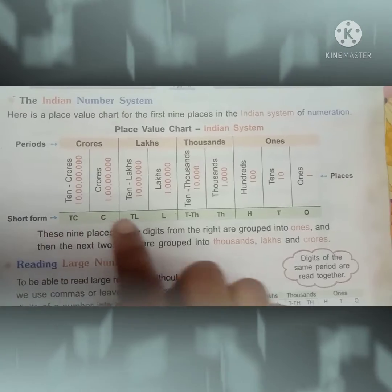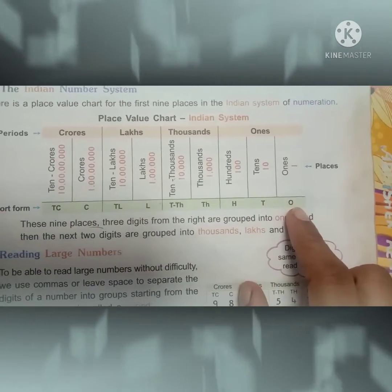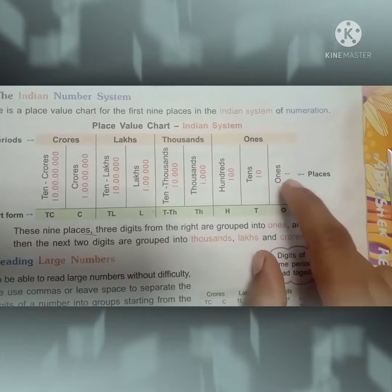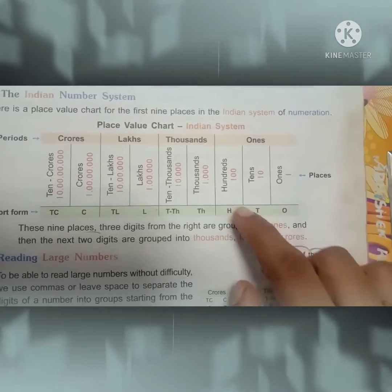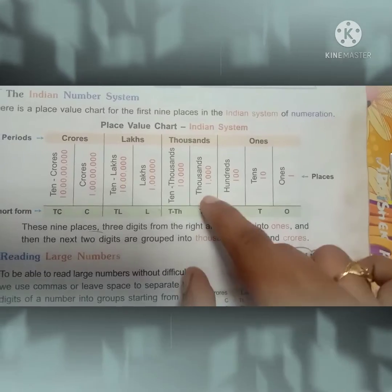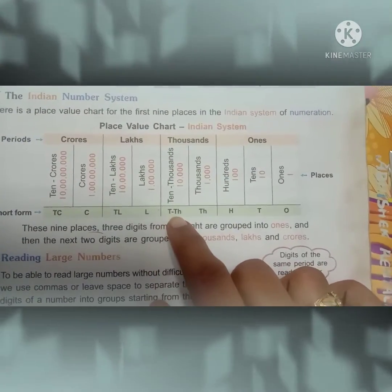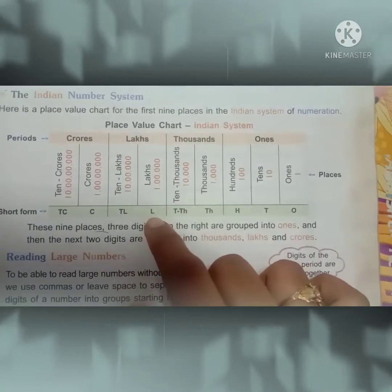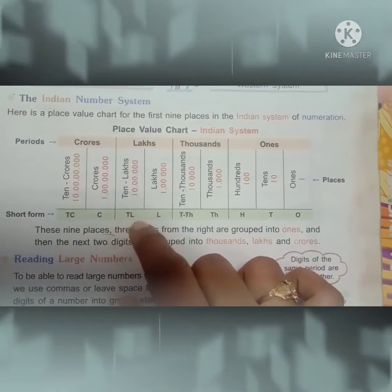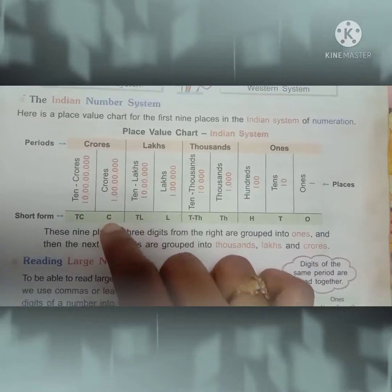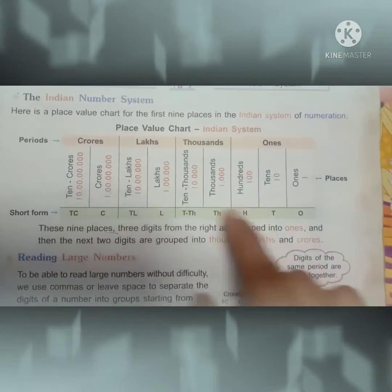Now see the short forms. Ones is written as O, tens as T, hundreds as H, thousands as TH, ten thousands as TTH, lakhs as L, ten lakhs as TL, crores as C, ten crores as TC. This is the short form.